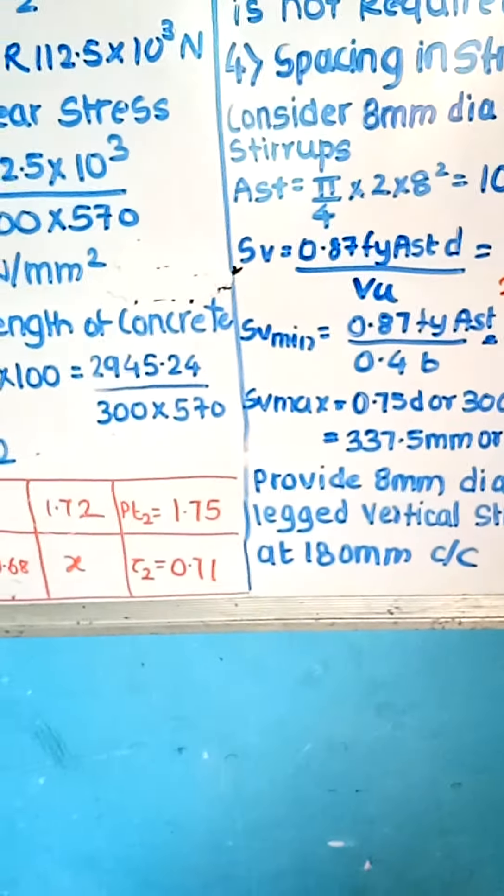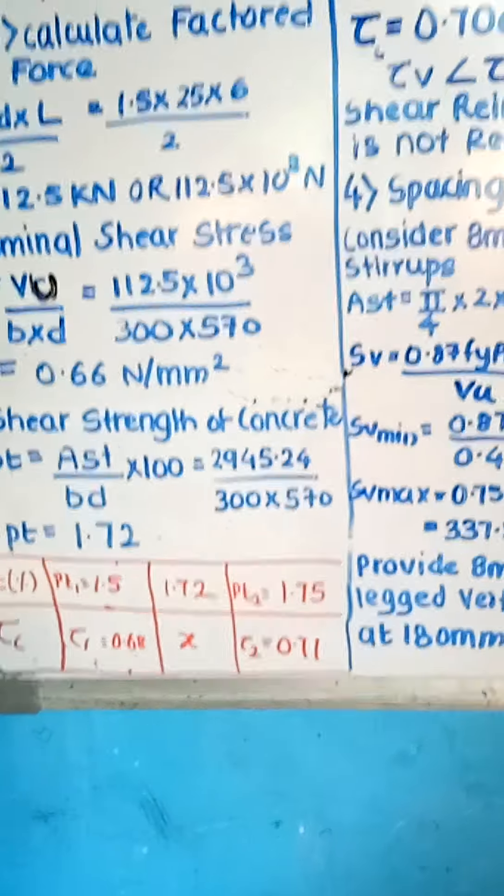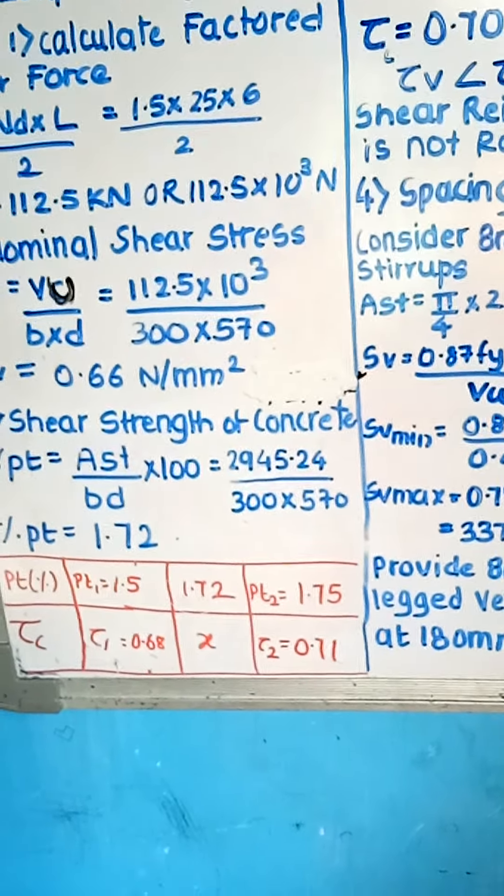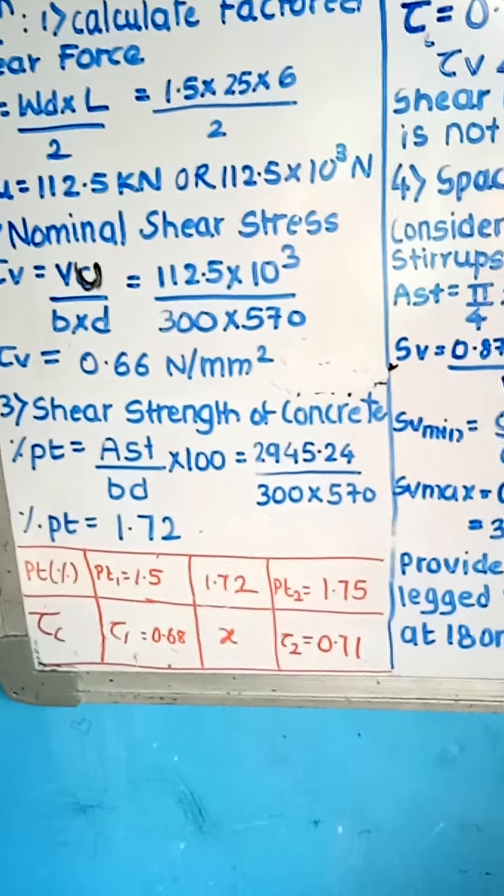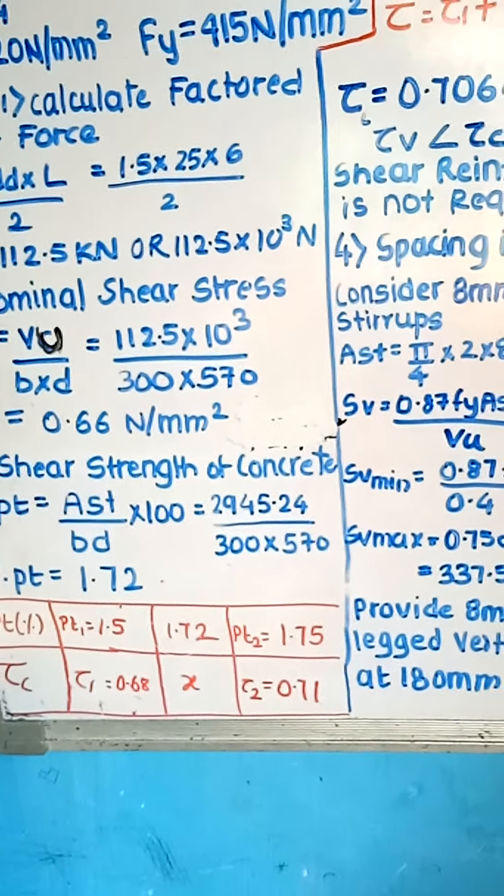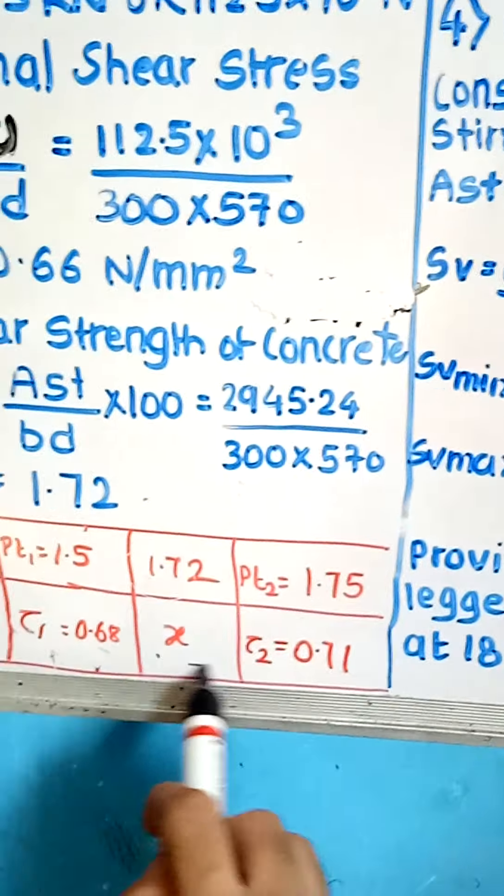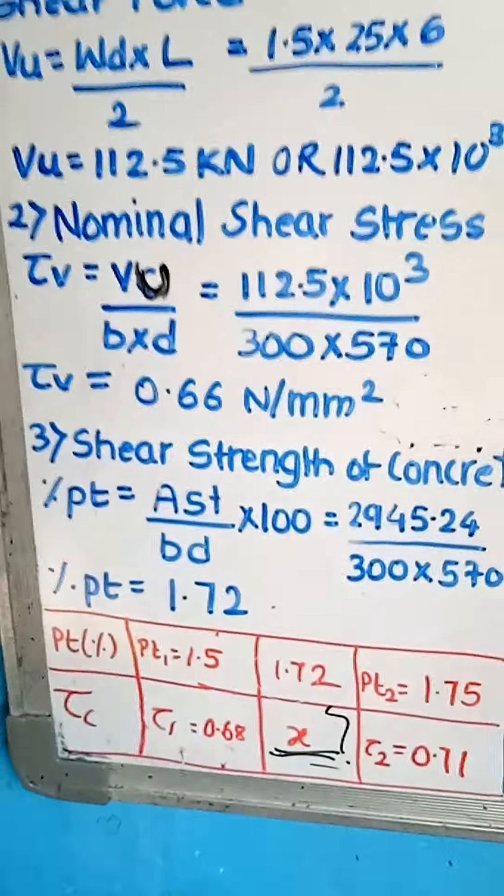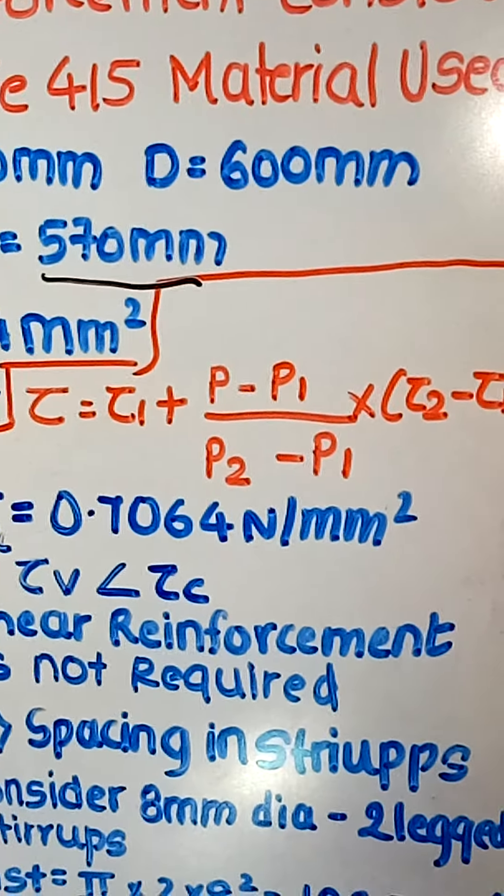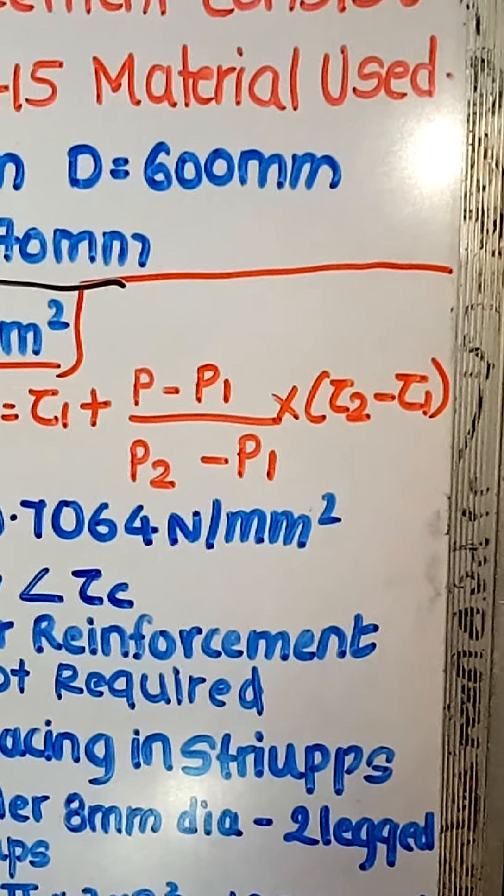So we are assuming Pt 1.5 and 1.72 is what we have in the question. We don't have Pt 1.72 in the table, that's why I will draw at the bottom. The question is, given Pt limit and tau C. For Pt 1.5, the formula mentioned is: tau is equal to tau 1 plus (P minus P1) upon (P2 minus P1) into (tau 2 minus tau 1).